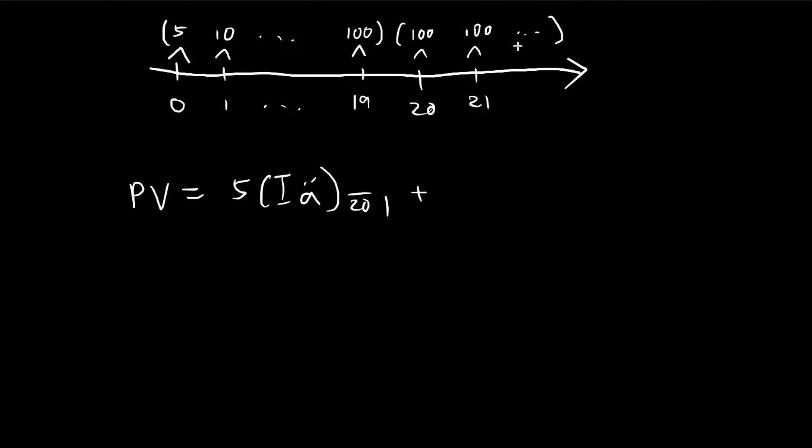And then for this section, we can find the present value of this perpetuity, which would give us the value at time 20, and then we can bring it back to time 0.